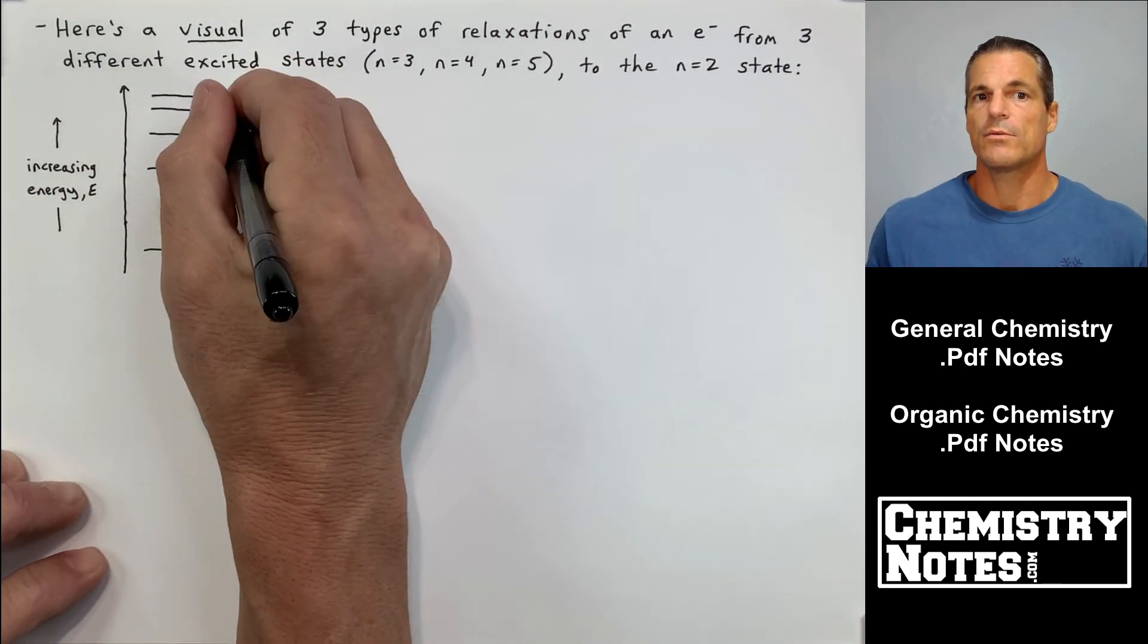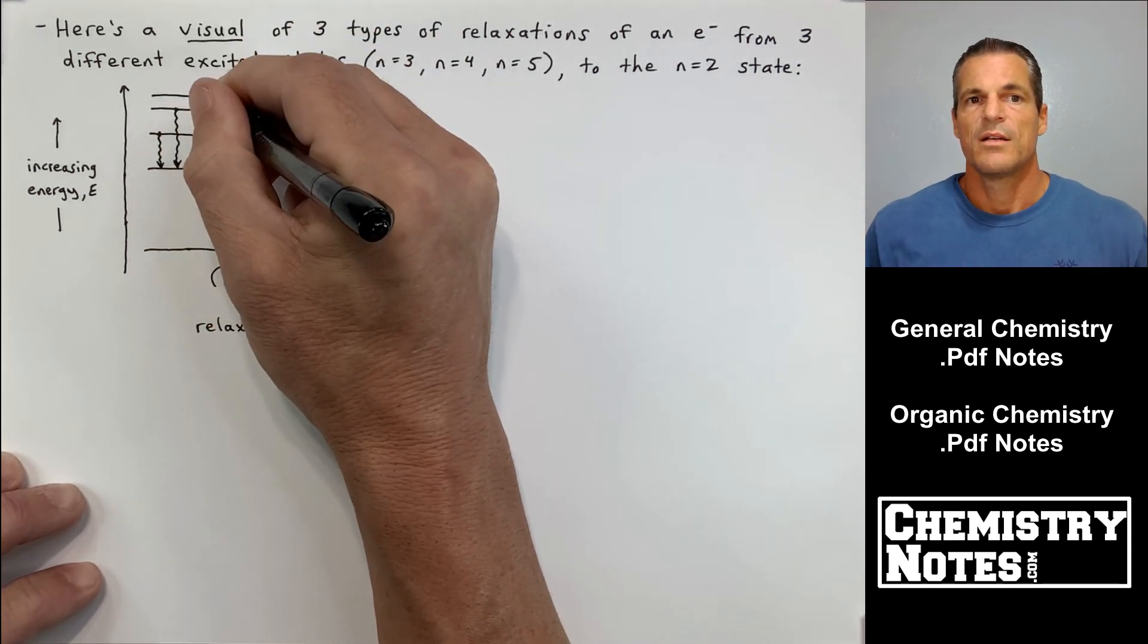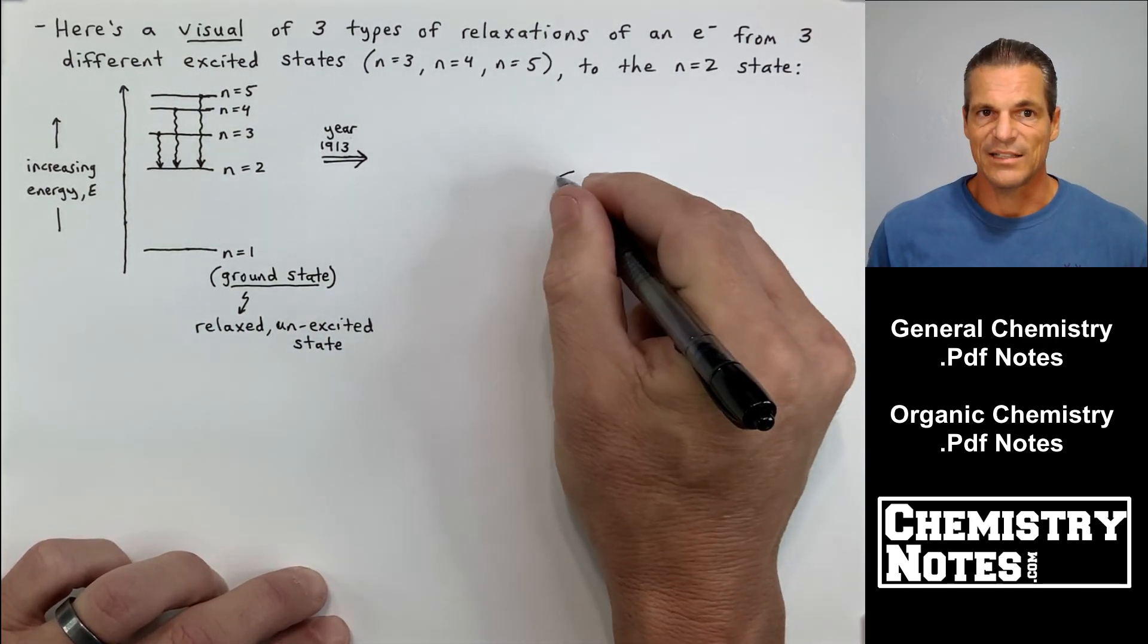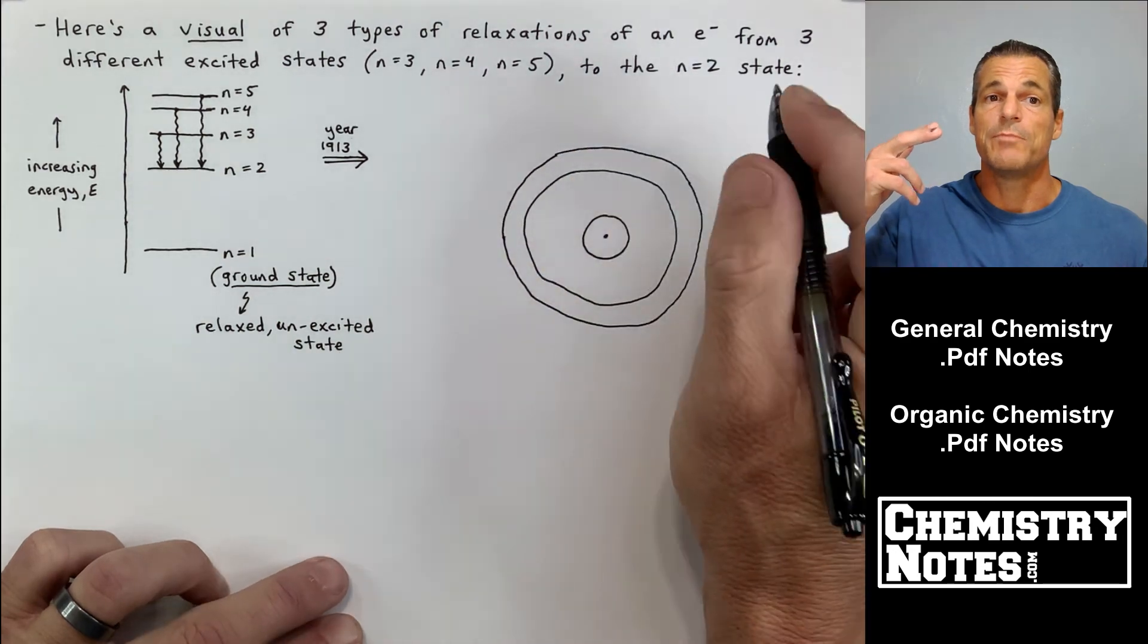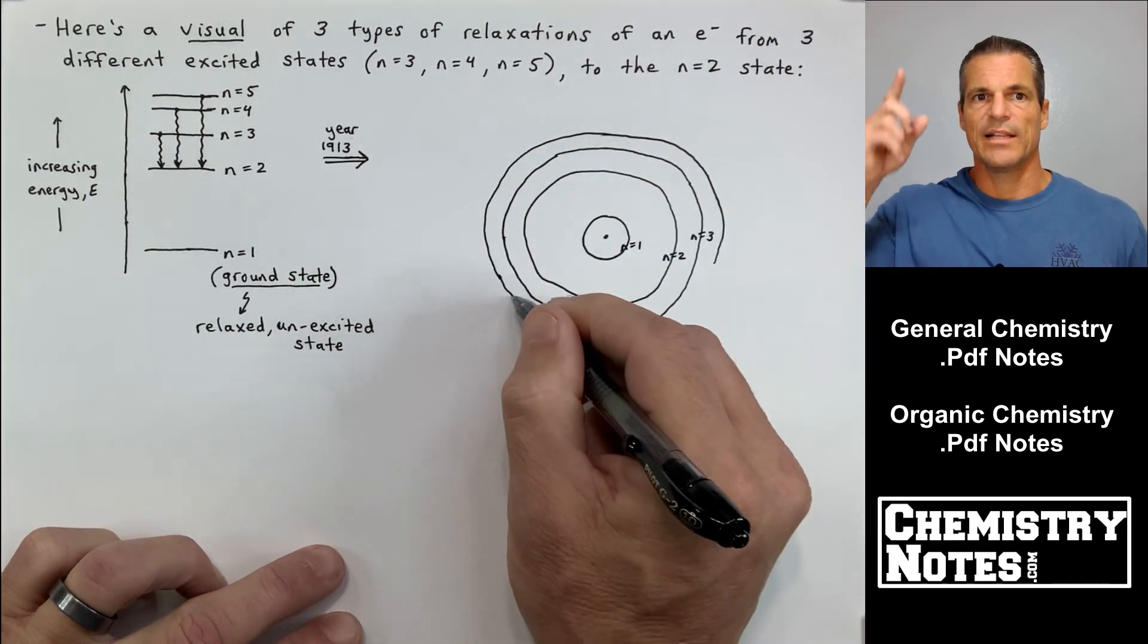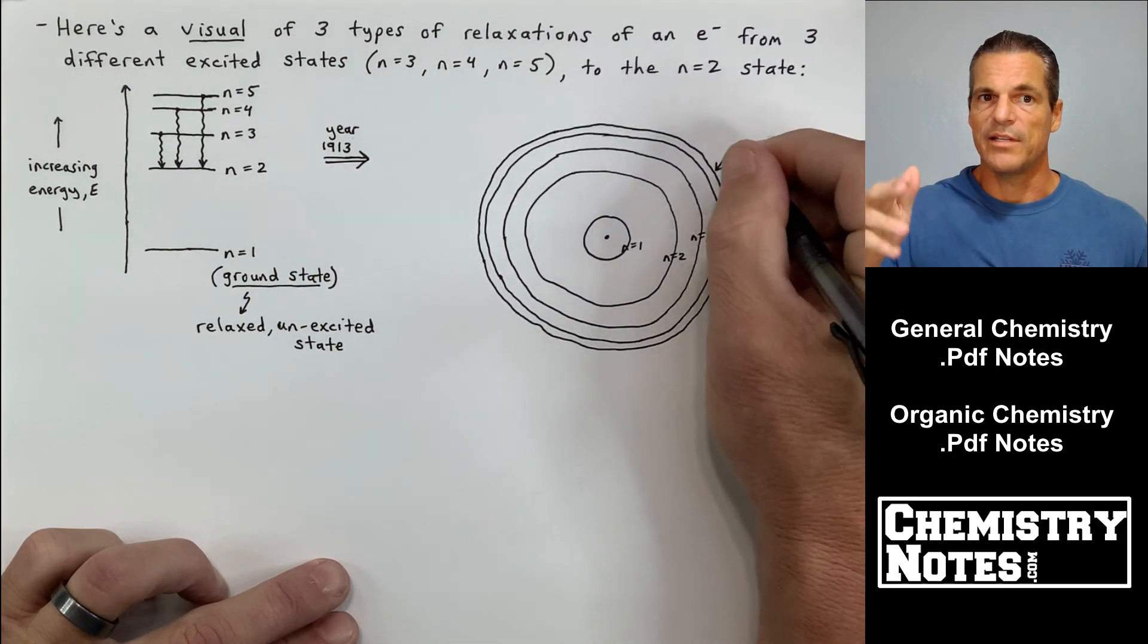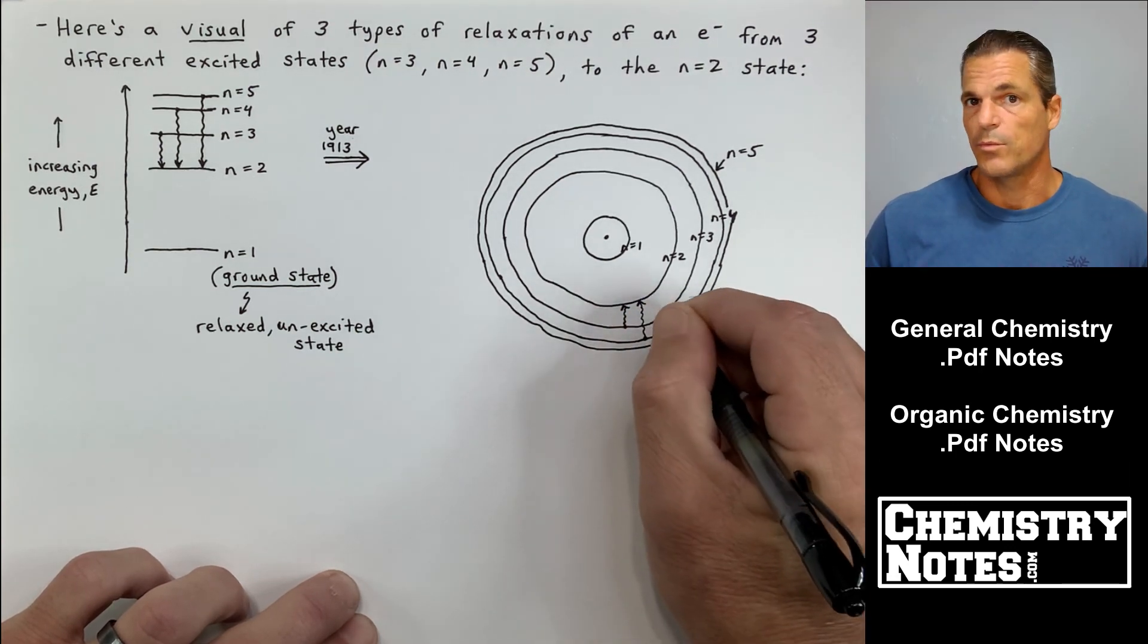So what I'm drawing is I've got my n equals 1 ground state. That's where the electron likes to chill out and hang out. Then n equals 2, n equals 3, n equals 4, and so on. These are all excited energy levels. I'm drawing three different scenarios. The far left squiggly down arrow is going from n equals 3 to n equals 2, the middle one is from n equals 4 to n equals 2, and the third is from n equals 5 relaxing down to the n equals 2 state.